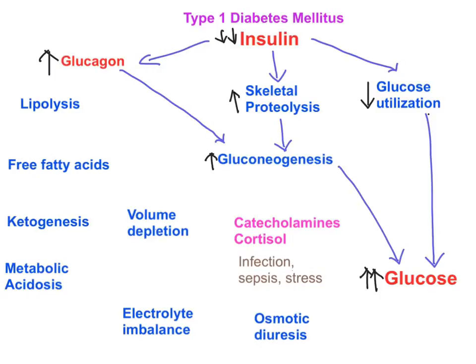Whenever glucagon is elevated, it also leads to adipose tissue lipolysis — the triacylglycerol in adipose tissue is broken down into free fatty acids and glycerol. The glycerol from this process can enter gluconeogenesis, further increasing glucose levels. Free fatty acids travel to peripheral tissues, with most going to the liver, where they undergo oxidation releasing acetyl-CoA.